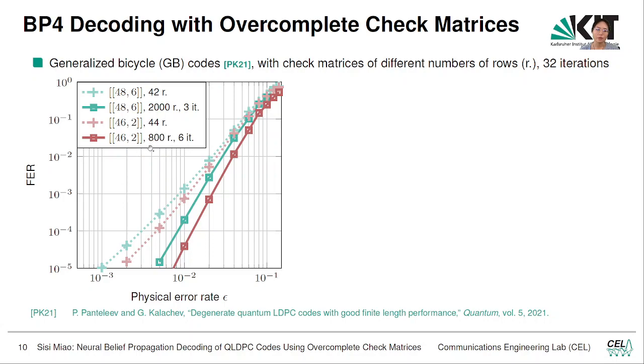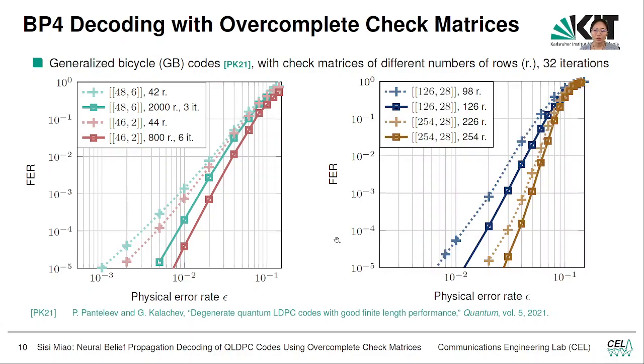We also have the result for two bigger codes. Here we can observe a similar gain, but here we did not find a large number of redundant checks just as these codes. We only had 28 low-weight checks, but we can still get a good performance gain if we keep the number of iterations unchanged.